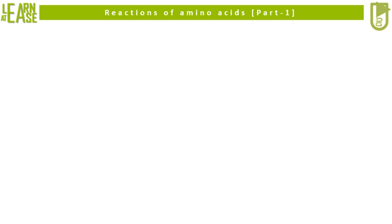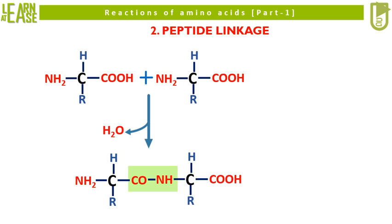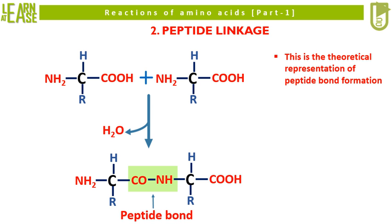The second reaction is formation of peptide bond. The theoretical representation of peptide bond formation shows that when two molecules of amino acid are joined, the amino group and the carboxylic group of two different amino acids react with each other and form a CONH linkage. This linkage formed between the amino group and the carboxylic group is called a peptide bond.